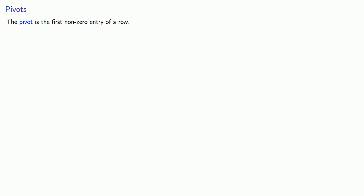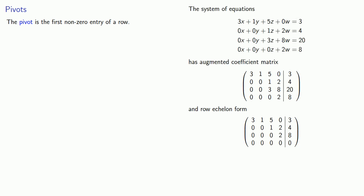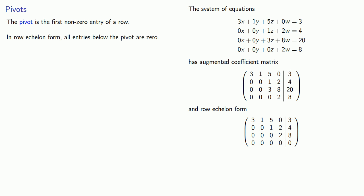To make it easier to discuss elementary row operations, we introduce a couple of terms. The pivot is the first non-zero entry of a row. For an augmented coefficient matrix, the first non-zero entry of each row is the pivot of that row. For this matrix, the first row pivot is 3, the second row pivot is 1, the third row pivot is 3, and the fourth row pivot is 2. When we reduce to row echelon form, all entries below each pivot are 0 — so 3 is the first row pivot with everything below it being 0, and likewise for the remaining rows.